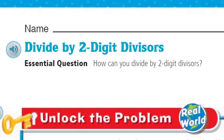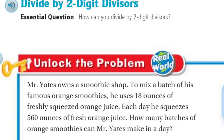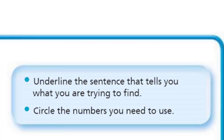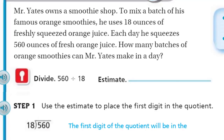We can't do any of that unless we unlock the problem. It's real world! Now let's go ahead and say: Mr. Yates owns a smoothie shop. To mix a batch of his famous orange smoothies, he uses 18 ounces of freshly squeezed orange juice. Each day he squeezes 560 ounces of fresh orange juice. How many batches of orange smoothies can Mr. Yates make in a day? We're going to underline the sentence that tells you what you are trying to find, and circle the numbers you need to use. I kind of like just looking back at the problem and digging it apart, so we understand the purpose of division in this problem.